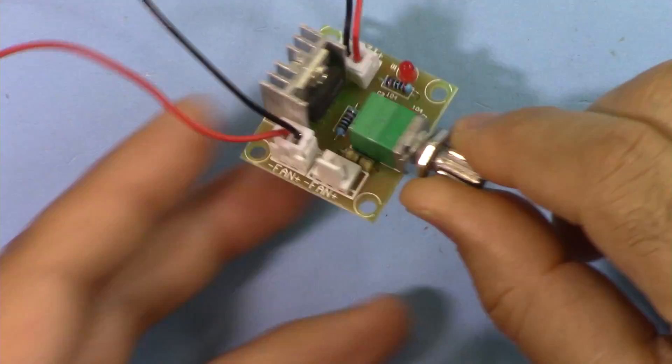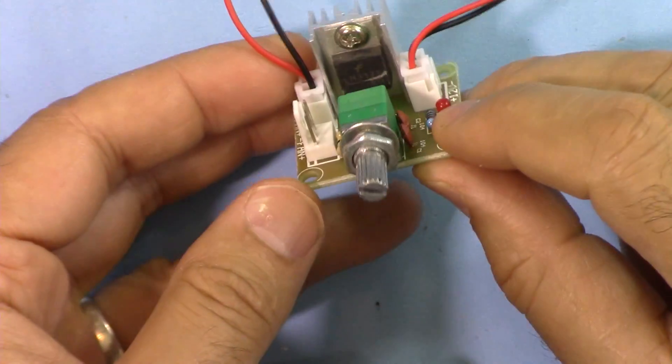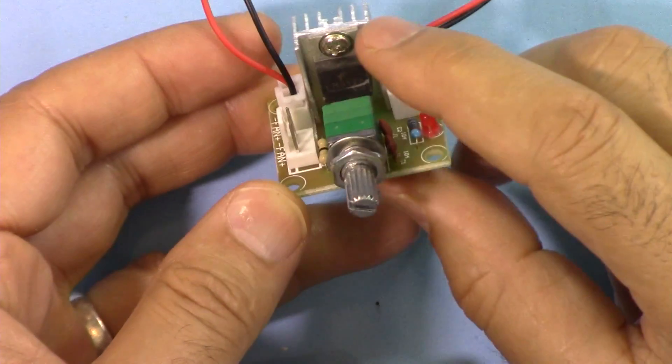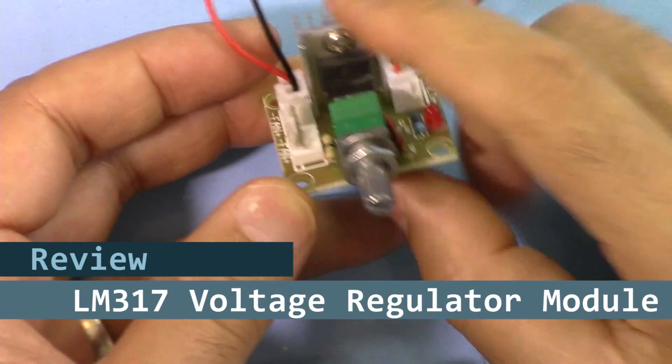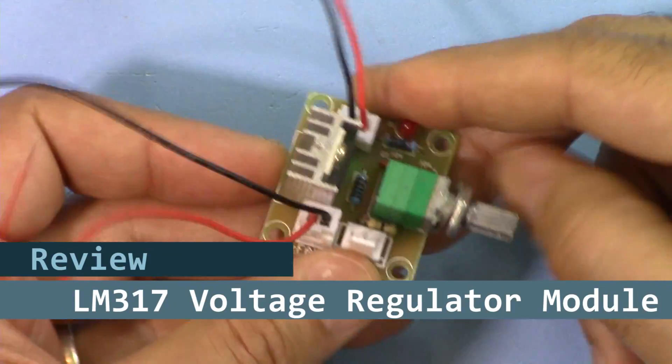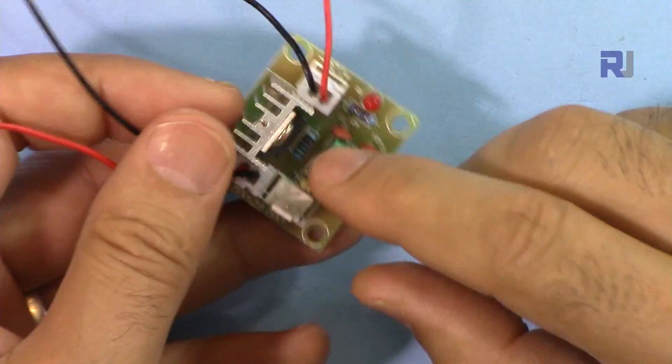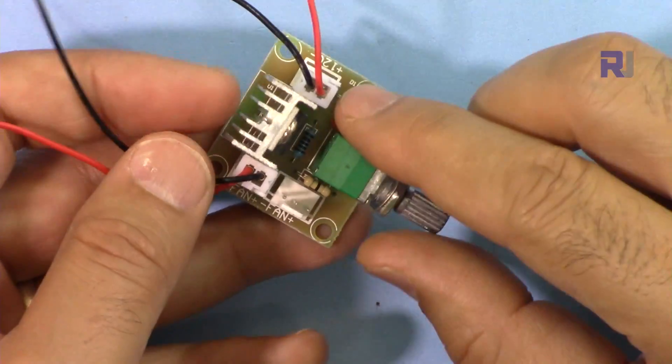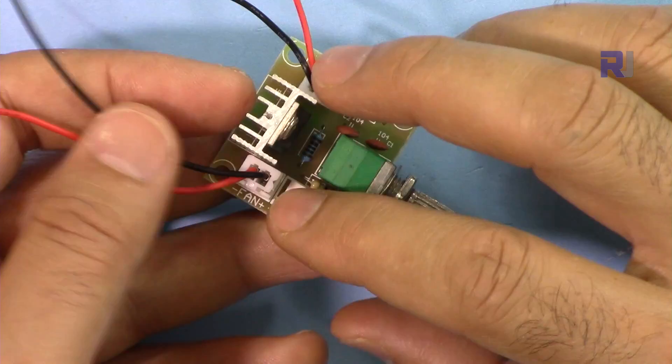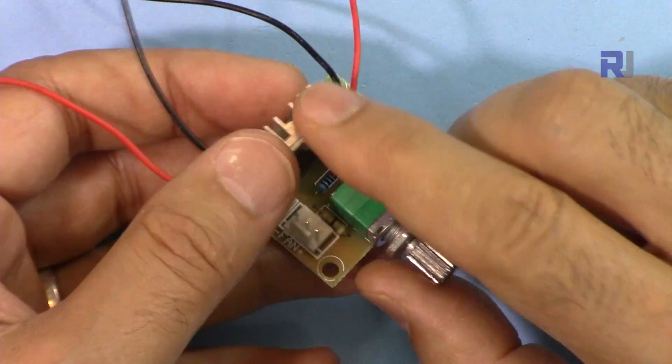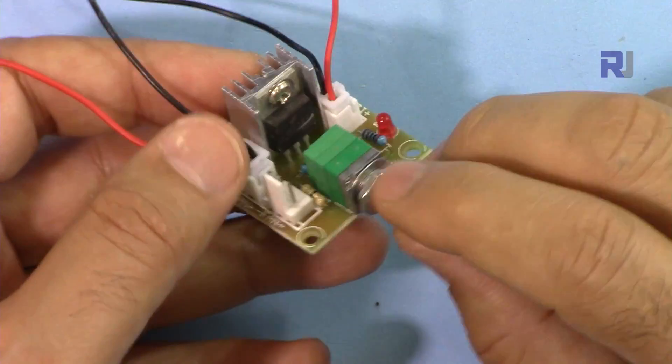Hi, welcome to a product review by Robojax. In this video we are going to have a look and test this LM317 voltage regulator that is sold as a module on eBay. We are going to check how much input and output voltage this one can accept and provide and also we will see how much load or current this can tolerate or handle.